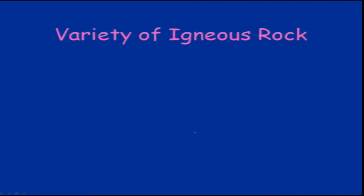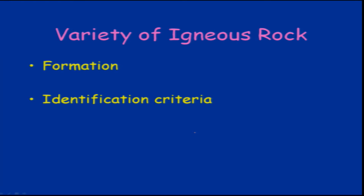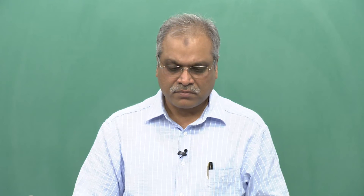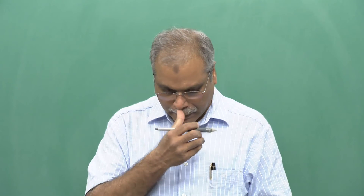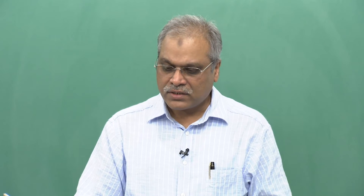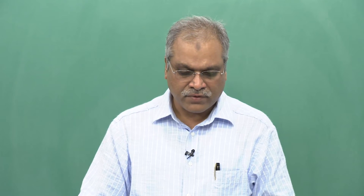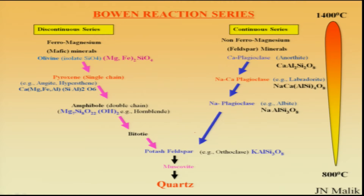Moving further, we look at the variety of igneous rocks — their formation and identification criteria. We will see how we can differentiate one rock from another and whether it is an intrusive or extrusive rock. As we discussed in the lecture on minerals, we looked at the continuous and discontinuous series and how minerals are formed at different stages, and how cooling of magma affects the formation of different crystals and minerals.